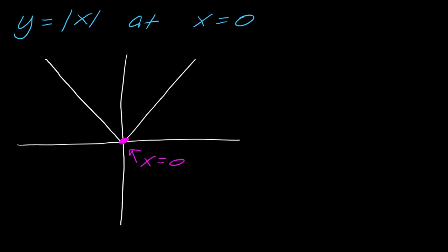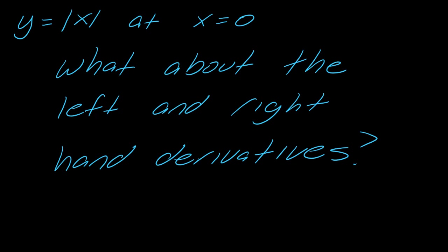So at x equals zero, that is a problem point. The derivative does not exist because that's a corner. So the derivative would not exist there. But what about the left and right hand derivatives at that point?